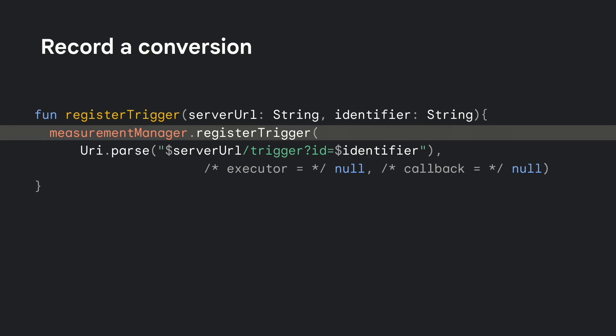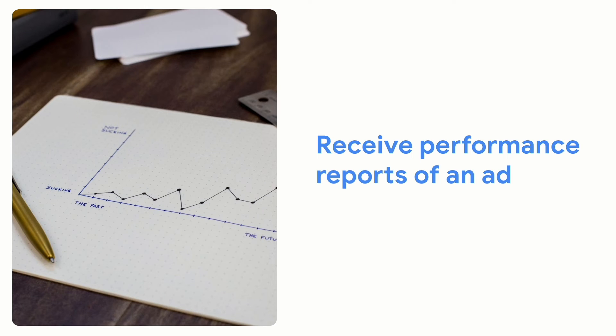After the user has seen or clicked the advertisement, let's say they were inspired to purchase the product being advertised. You'll want to record this action as a conversion. You can do this by invoking the measurement manager's register trigger function. Similar to register source, you'll pass register trigger an enrolled endpoint from the ad tech service and can include optional identifiers. The data that gets sent to the ad tech service takes the form of event level and aggregate reports.